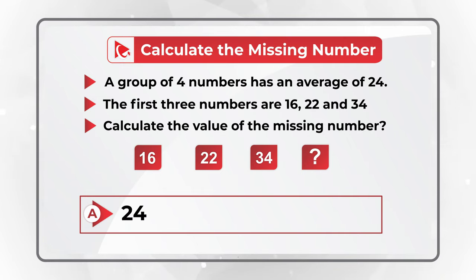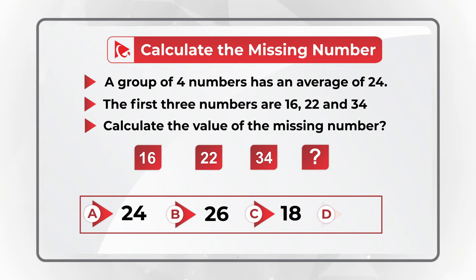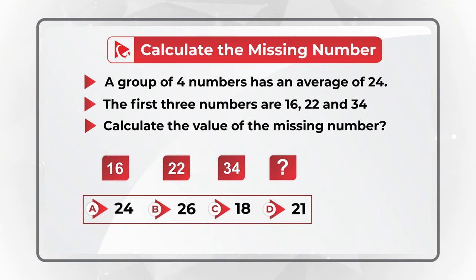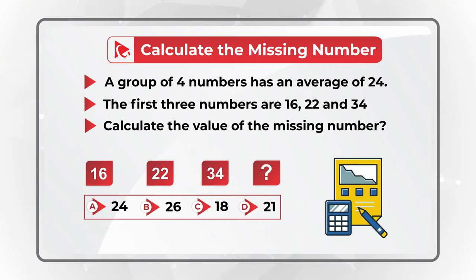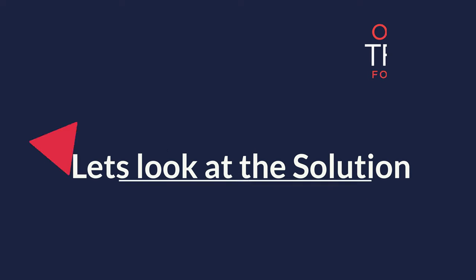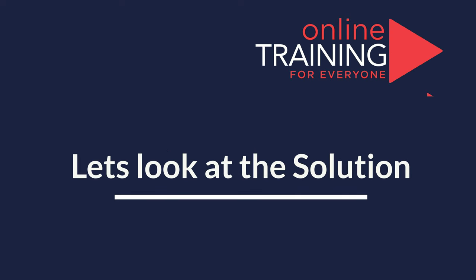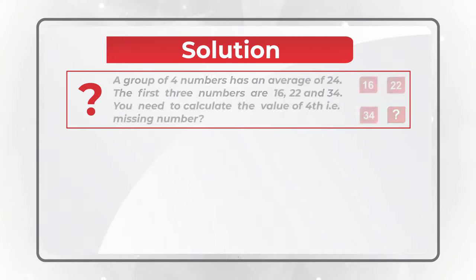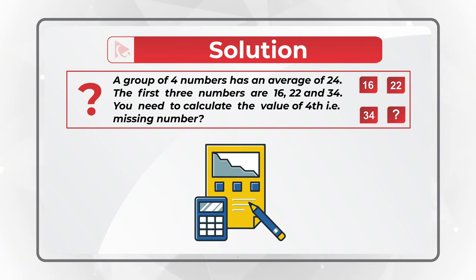Choice A 24, choice B 26, choice C 18, and choice D 21. Can you do the math? Let's move forward so we can get to the correct solution together. Obviously to solve it you can plug in one of the four solutions instead of the missing number and calculate the average to see which one is correct, but we're going to take a different route.